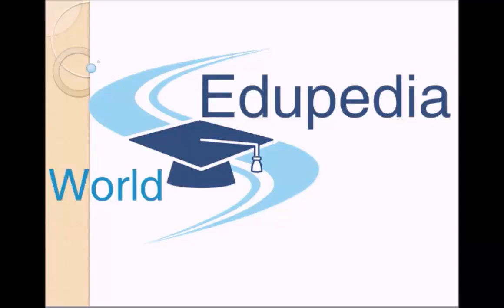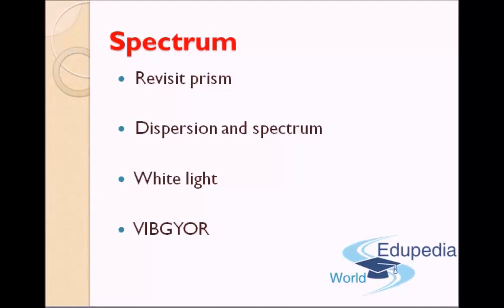Hi friends, welcome back to Edipedia World. Today we will begin our discussion about a new chapter which is a continuation of our previous chapter on light — the properties of light. We will revisit the concept of prism, further our knowledge into dispersion and spectrum, see how white light differs from monochromatic light, and conclude by examining the different components that make up white light or sunlight. So this sounds like an exciting class. Let's start it.